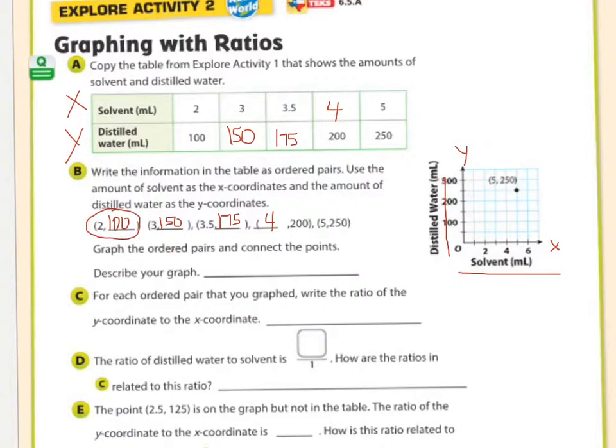So the 2 and the 100 go together. So you go across to the 2, and up to 100, and you put a dot. 3 is...they don't show you the 3. You have to know 3 comes between 2 and 4. And they don't show you the 150. You have to know that's halfway between 100 and 200. 3 and a half, 175. 3 and a half is going to be, like, right here. And 175 is going to be about here. So that's here, right there in that square, like that. And then 4 and 200. And then 5 and 250 is graphed for you.